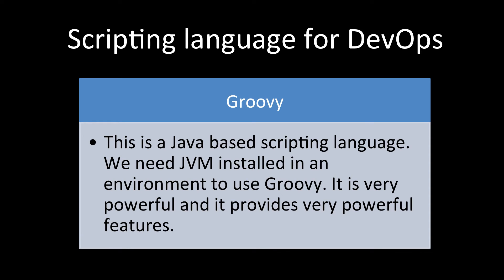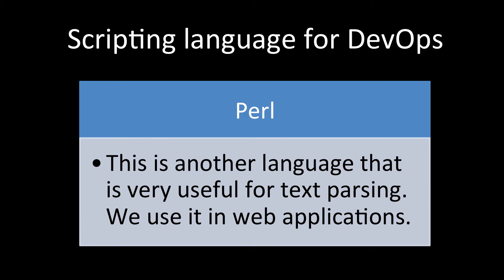Groovy is a Java-based scripting language — behind the scenes, it runs on the JVM, so you need a Java machine in the environment to use it. It is very powerful and provides powerful features. Compared to writing Java code, you can develop things much faster in Groovy, making it ideal for JVM environments.